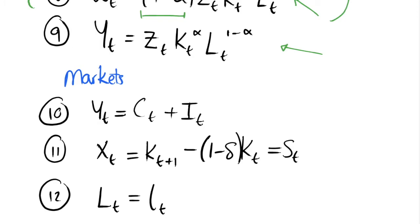Three more equations characterise our markets: the national income identity; investment equals savings via the capital accumulation formula from the Solow growth model, where capital in period t+1 equals investment plus the depreciated capital stock in period t; and the assumption that the aggregate level of labour equals the individual choice of labour, since we use a representative individual with a normalised labour stock.